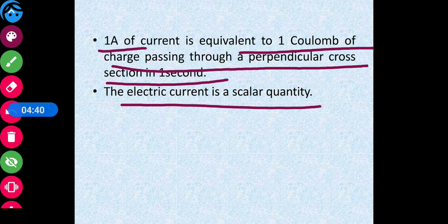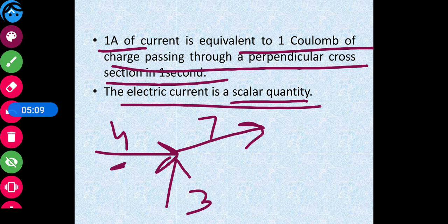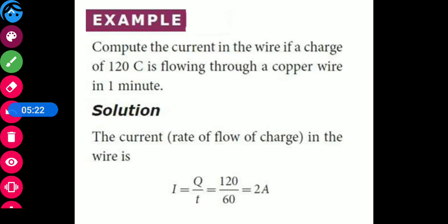Though current has a direction, it is still a scalar quantity, and that is why it can be added algebraically. For example, if one current of 4 ampere is coming from one direction and another current of 3 ampere is coming from another direction toward the same point, the sum of the currents will be 7 ampere. They are not added vectorially but simply added algebraically, so current is a scalar quantity and not a vector quantity.